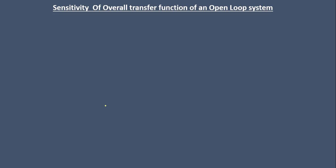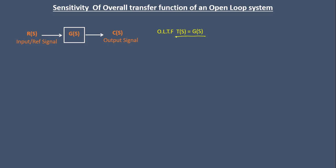In this session we will discuss the sensitivity of the transfer function of an open loop system. We have an open loop system with only a forward gain element G(s), and the transfer function of an open loop system is G(s). The transfer function is only a function of the forward gain element G(s).